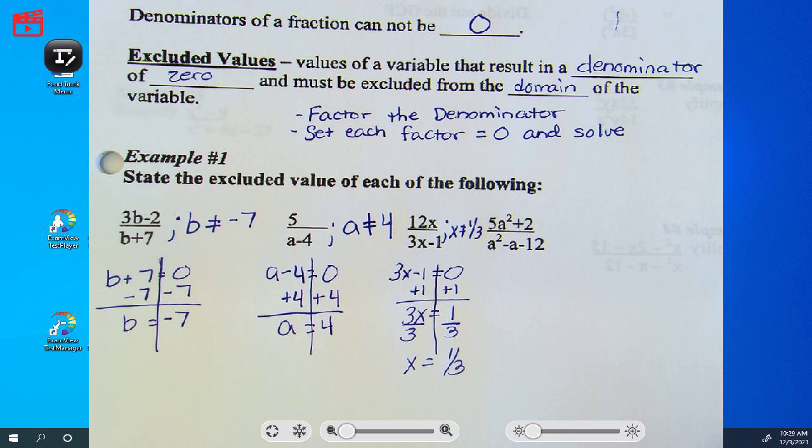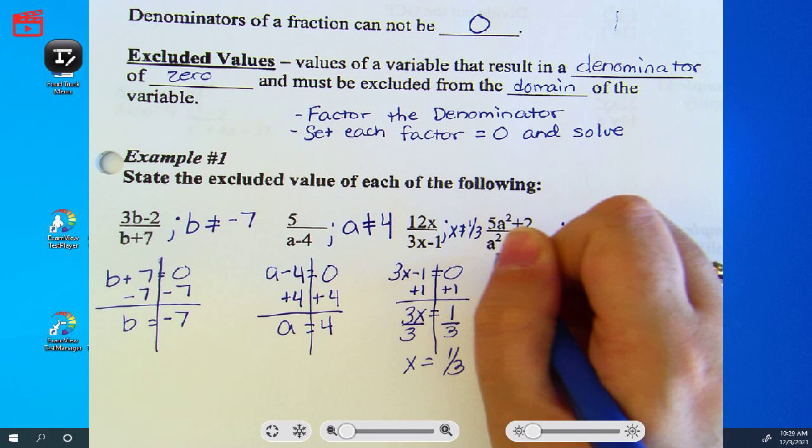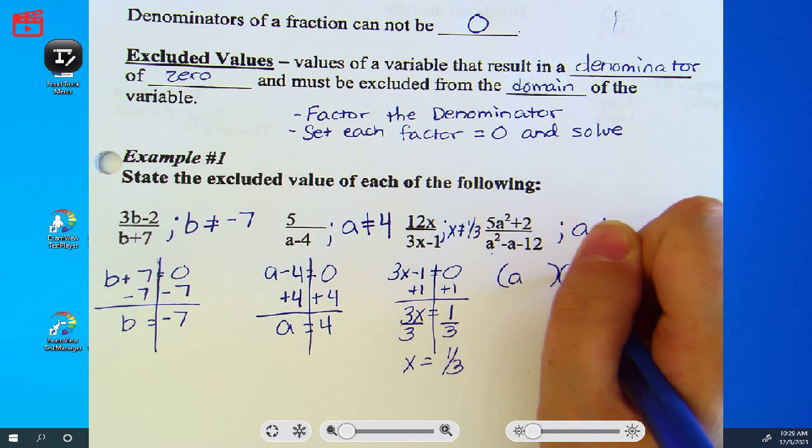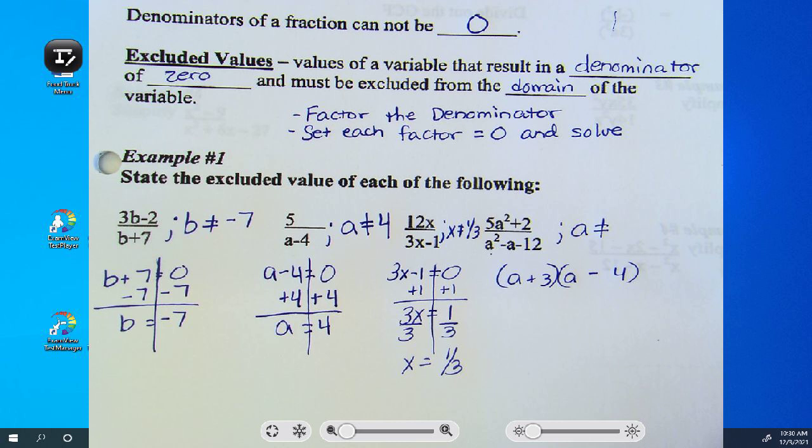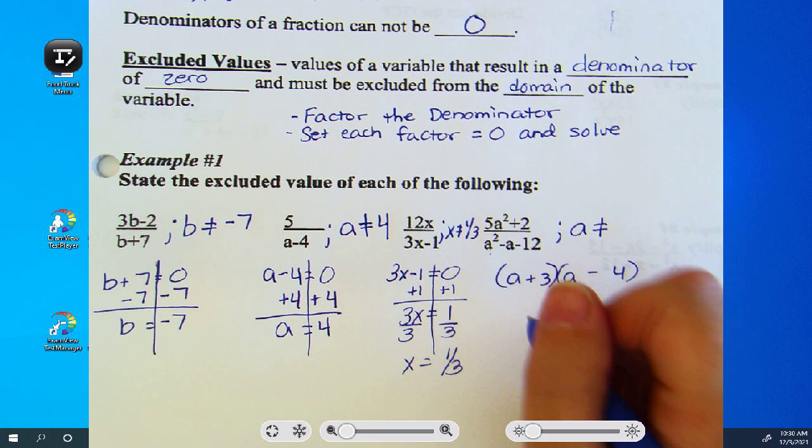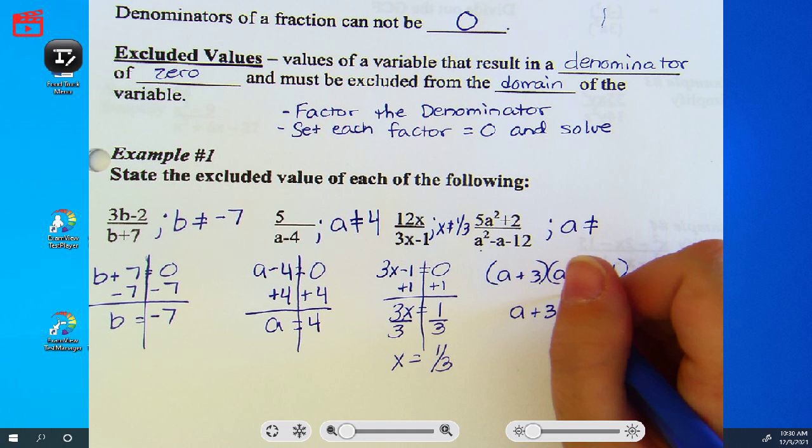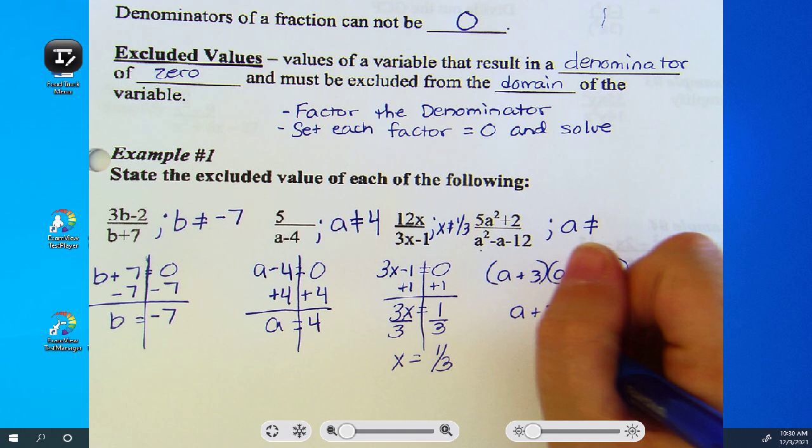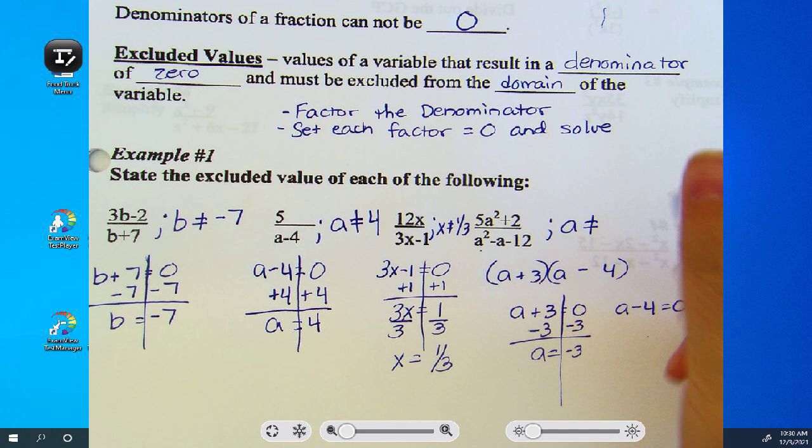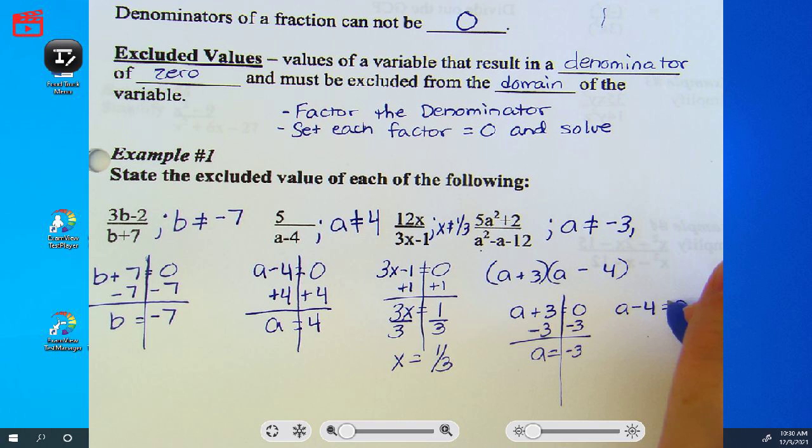The last one, you were told to factor the denominator. So we have a, a, 4, 3, negative 4, positive 3. Everyone should have had that factored for me. This is what it means by set each factor. We now got to do it twice. Got to set the first factor. And we got to set the second factor. We got to do two different ones. So how am I going to move the 3? Subtract. So I get a cannot equal negative 3. And how am I going to move the 4? So a cannot equal 4.